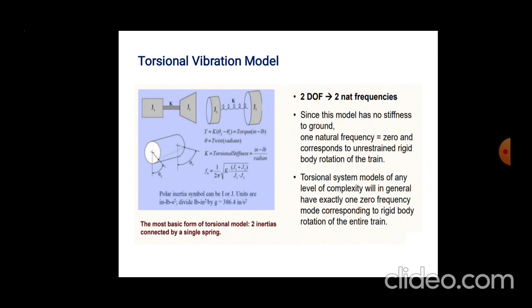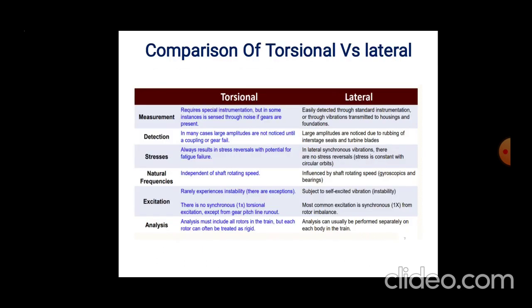The torsional vibrations model has two degrees of freedom — two natural frequencies. Since this model has no stiffness to ground, one natural frequency is equal to zero, corresponding to the unrestrained rigid body rotation of the train. Torsional system models of any level of complexity will in general have exactly one zero frequency corresponding to the rigid body rotation of the entire train. The formula is Fn equals the square root of torsion divided by k times (J plus J1) divided by (J1 times J2) — polar moment of inertia — for comparison of torsional and lateral vibrations.